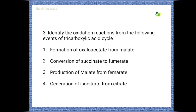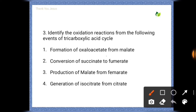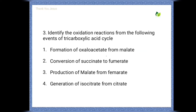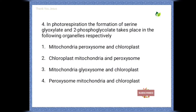Next question: Identify the oxidation reactions from the following events of the tricarboxylic acid cycle. Options are: formation of oxaloacetate from malate; conversion of succinate to fumarate; production of malate from fumarate; generation of isocitrate from citrate. Here, two options are correct — if the candidate chooses any one of these two, it will be considered correct.